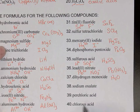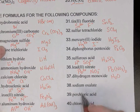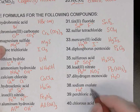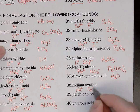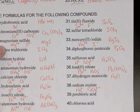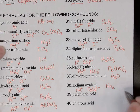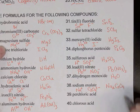Sodium oxalate: ionic. Sodium is an alkali metal: Na⁺. Oxalate is C2O4²⁻ — it's a complex ion — so we'll need two sodiums to cancel out that charge: Na2C2O4.